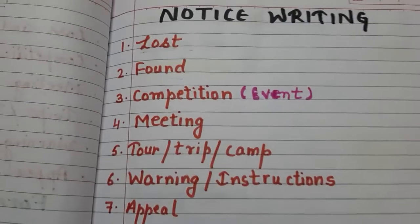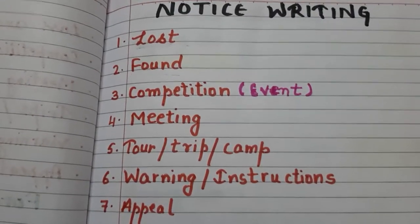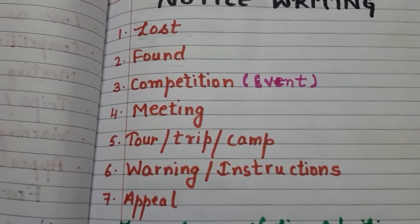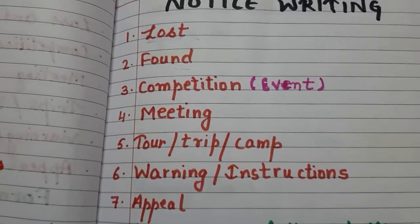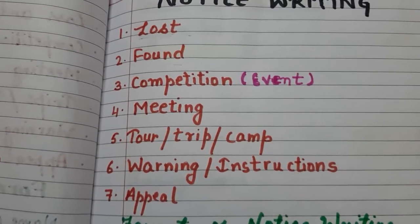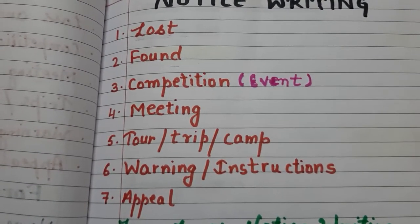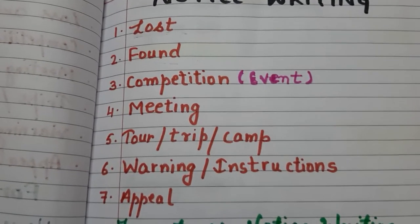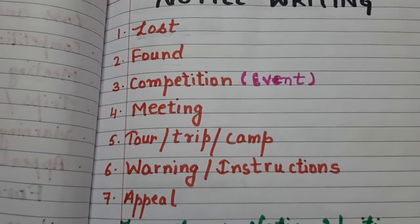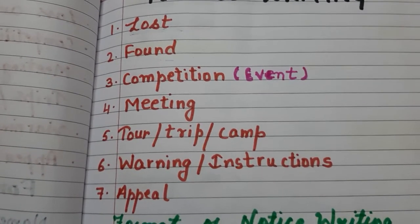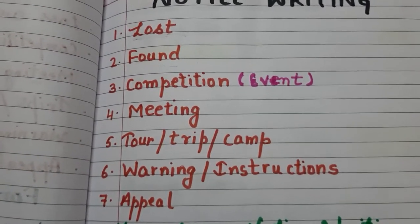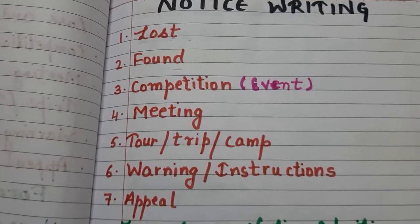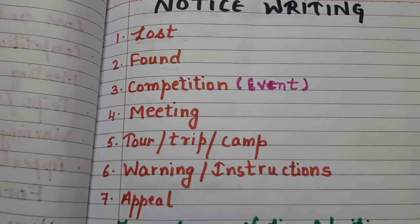We have done 7 topics: lost, found, competition, meeting, tour, trip, camp, warning, instructions — and last, today, which we have done, that is appeal. I hope you have no problem in these topics.